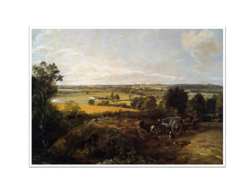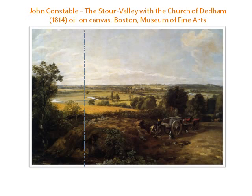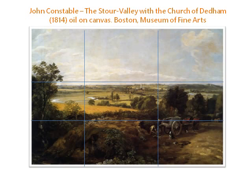Going back to where this originated — from old paintings — we have a picture here from John Constable, the Stour Valley and the Church of Dedham, from 1814. If we break it down, he's got the horse and cart to the right-hand side, the rockery and the trees to the left-hand side, and look where the horizon is — it's not in the middle. He's also got a front, a middle, and a back: the horse and cart in front, the trees in the middle, and the horizon as the background.